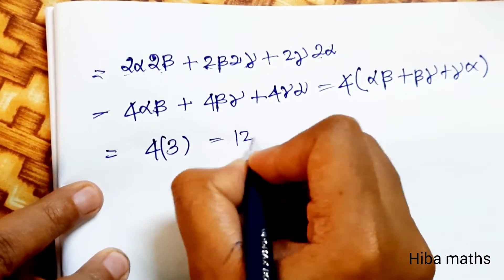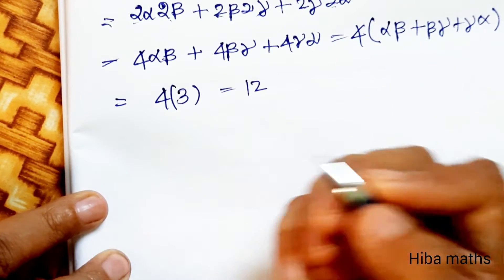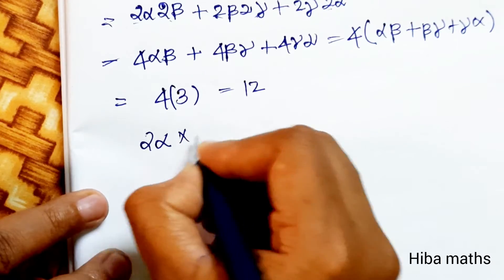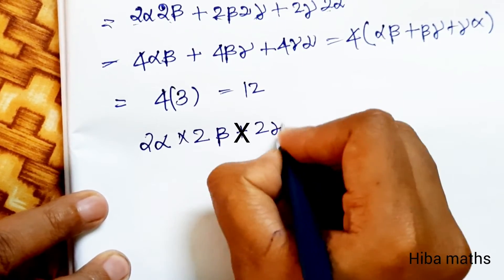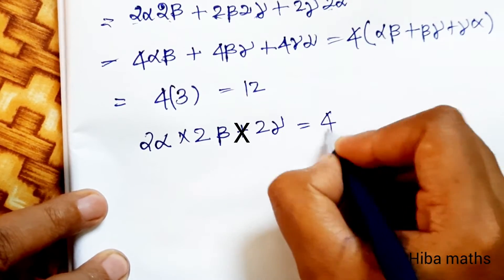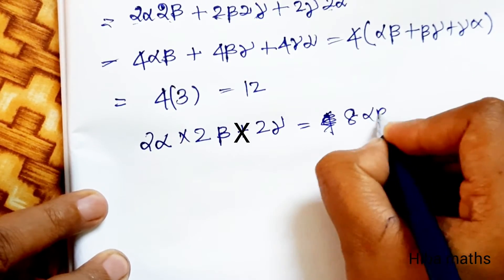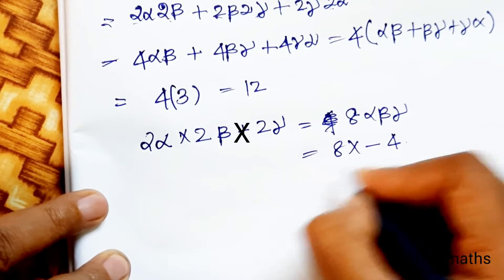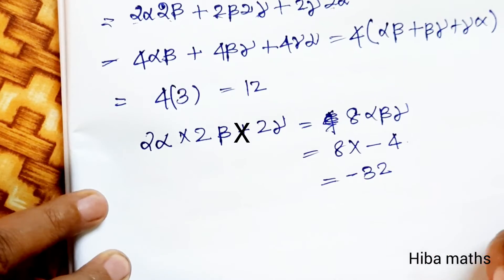Third, S3 = product of roots = 2α · 2β · 2γ = 8αβγ. The value of αβγ is −4, so S3 = 8 × (−4) = −32.